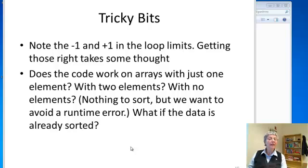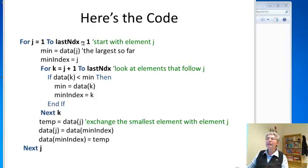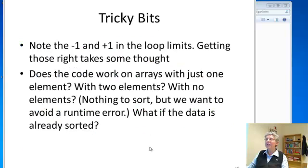Now there were some tricky bits. I don't want you to think that somebody just sits down and writes this code without thinking. Typically to implement any kind of reasonable algorithm, you have to actually think. And so for example, the plus 1 and minus 1 in the loop limits, that this should be a minus 1, that this should be a plus 1, typically takes some work to figure that out. And you also have to think about what happens if you give it an array with just one element, with two elements, even with no elements. Is the code going to work right or are you going to get a runtime error? What if the data is already sorted? Interestingly, there are some algorithms that work much better on unsorted data, some that work much better on almost sorted data, and so on.